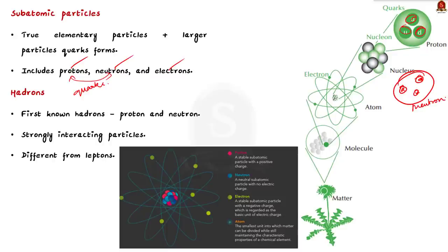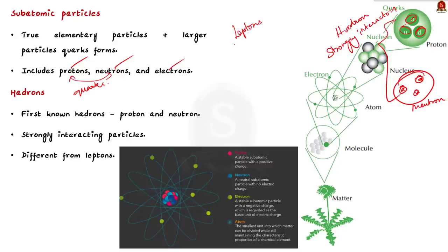A fact to remember is that protons and neutrons belong to a group called the hadrons. The first known hadrons were protons and neutrons. Hadrons are strongly interacting particles, and this strong interaction is the property that distinguishes hadrons from leptons, because leptons do not participate in strong interactions — in other words, leptons are weakly interacting particles. Scientists studying the universe need to study these subatomic particles.